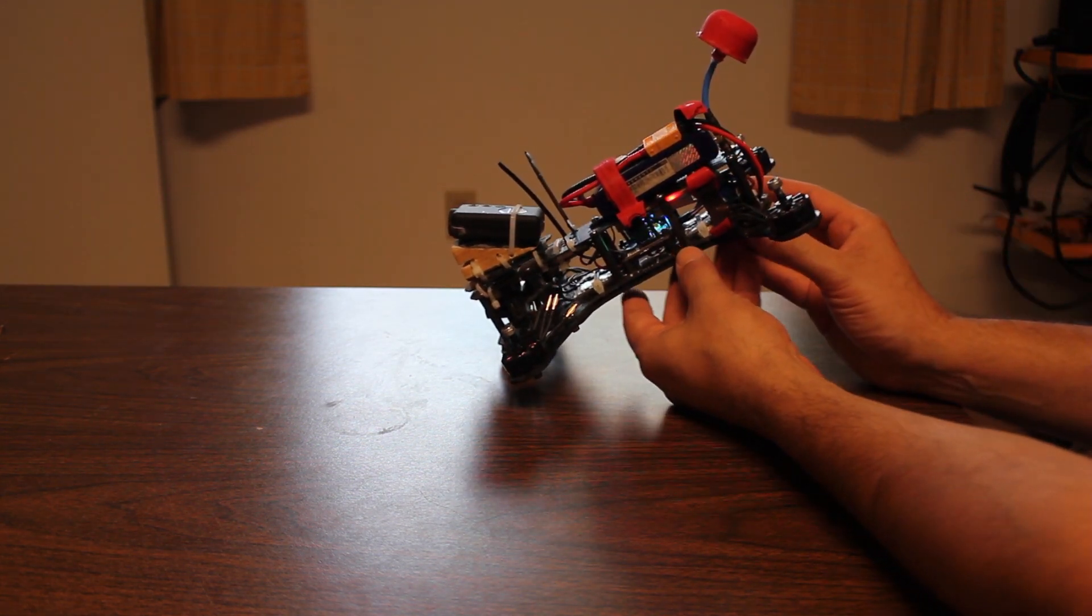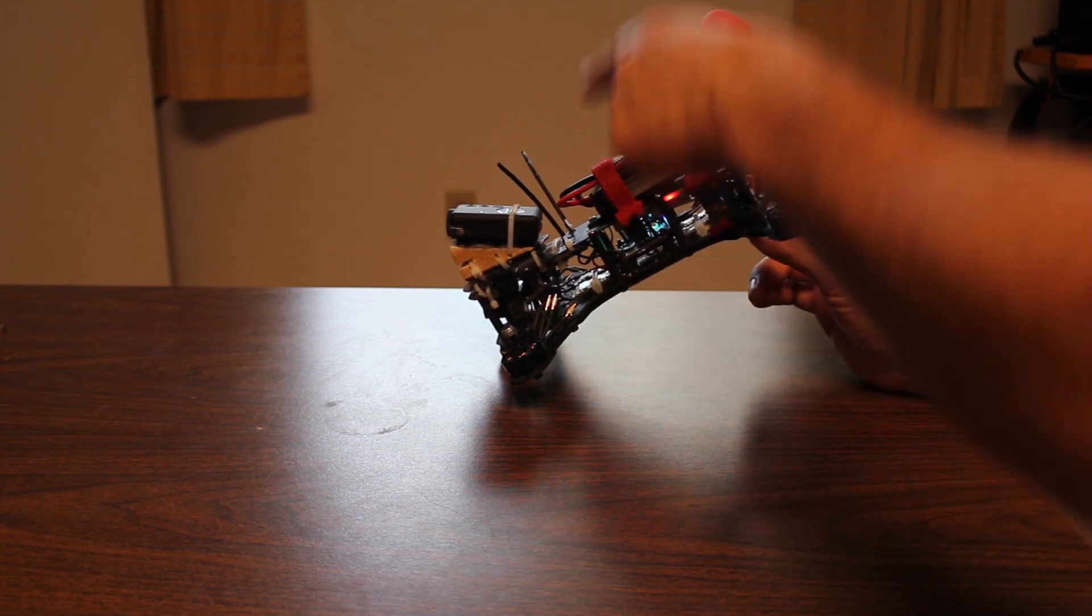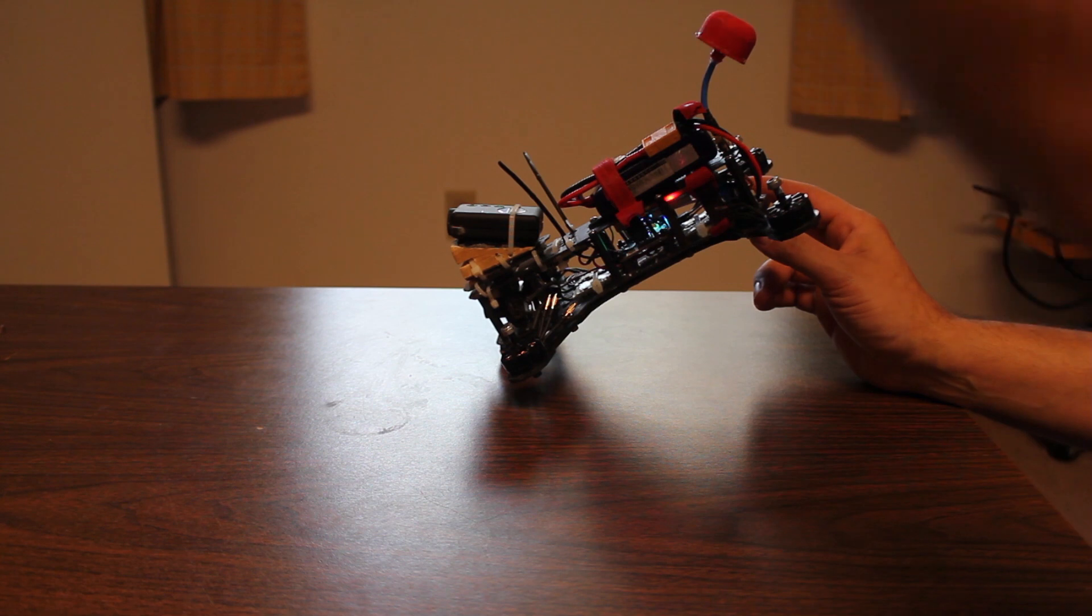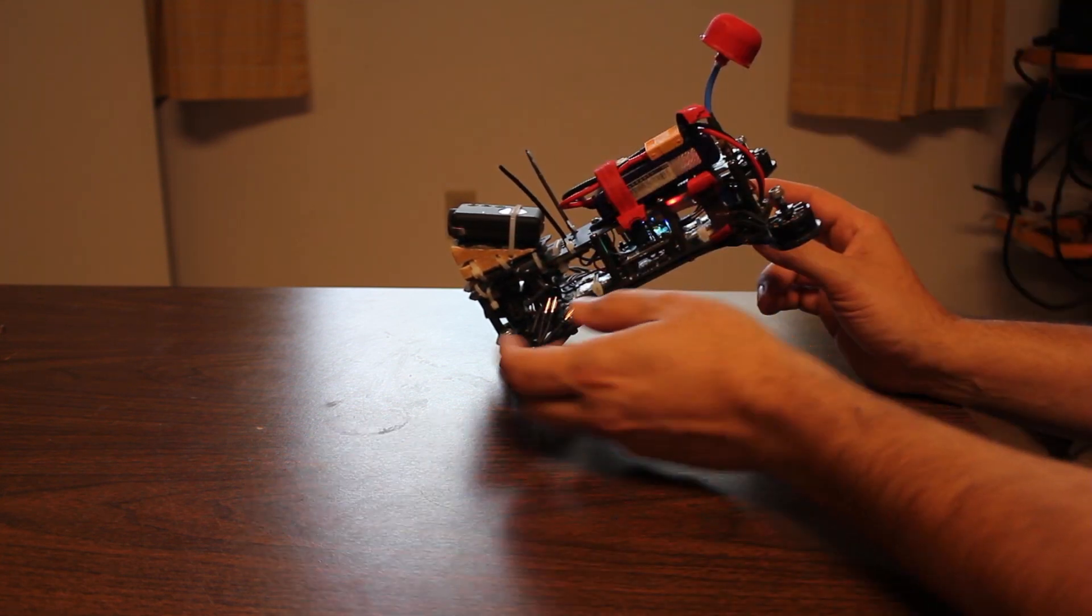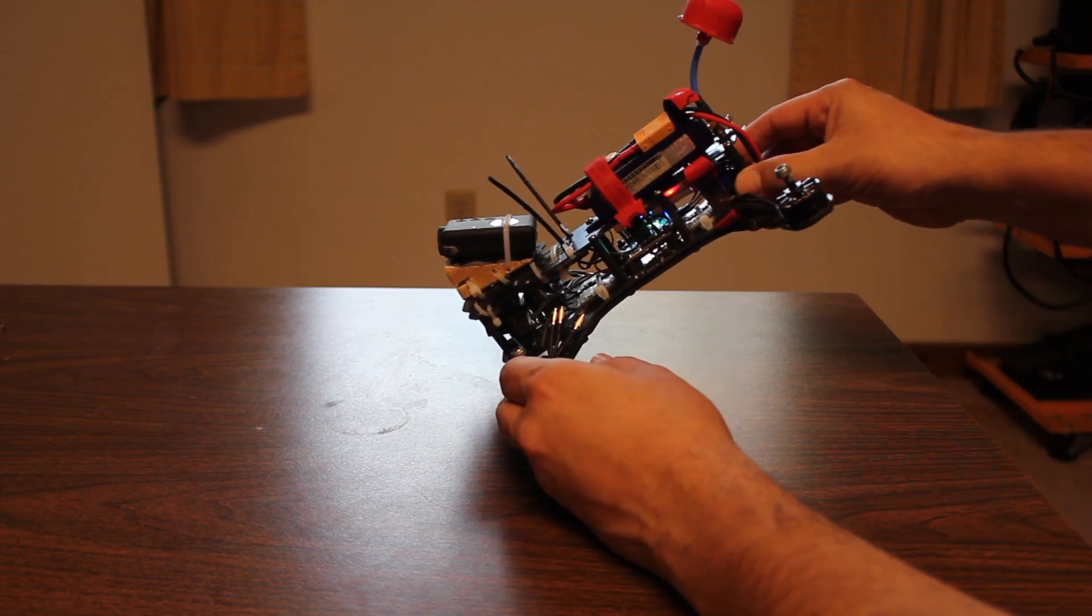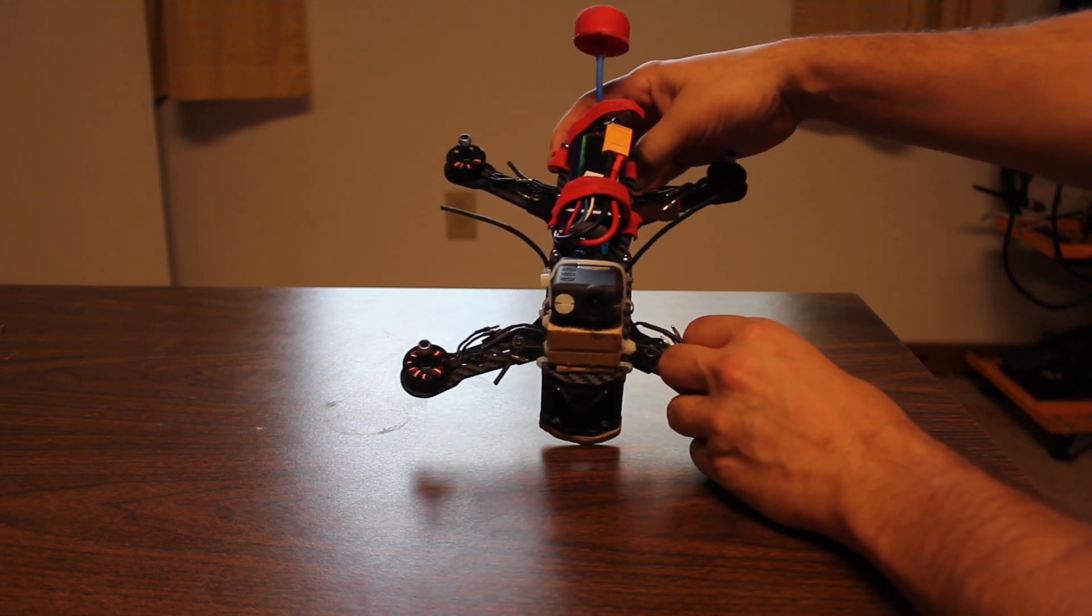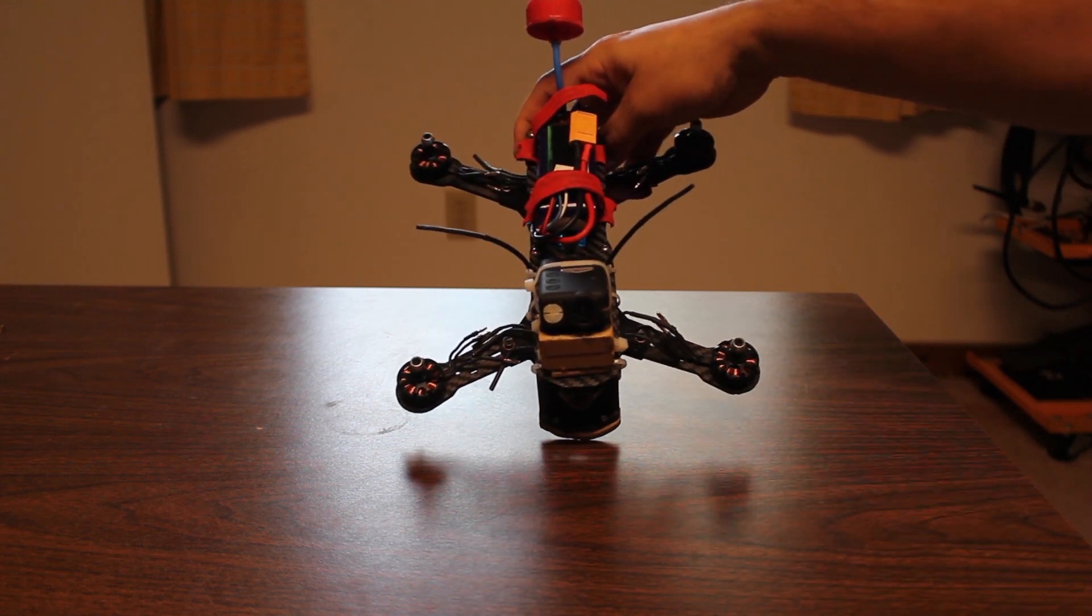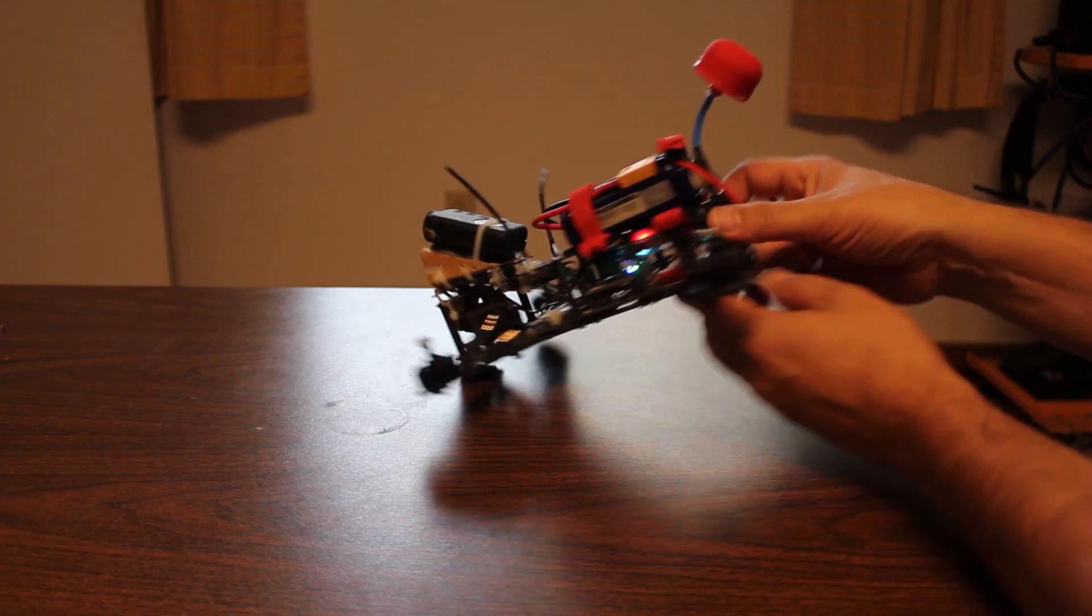When I first started flying in rate mode, I expected that the copter would yaw around this z axis, in other words relative to the earth. So if I was pitched forward and I yawed 90 degrees, the copter would end up pitched forward and yawed 90 degrees in whatever direction I turned. That is not actually how it works.